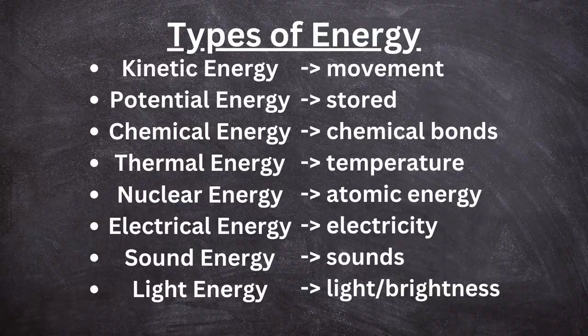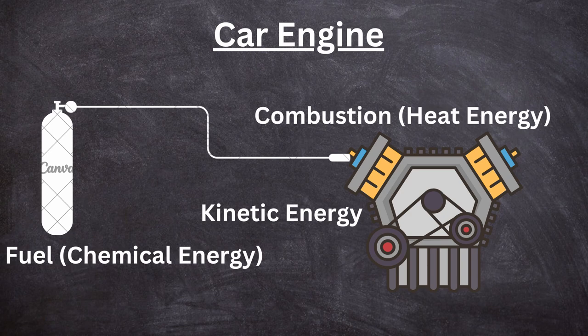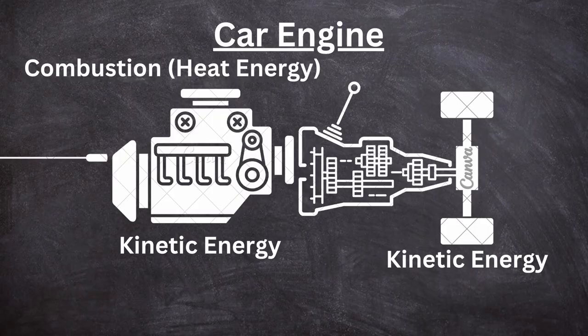Now let's use these two concepts to understand our question about the car. The car uses fuel and ignites it with oxygen in the air via a spark, triggering a transition from chemical energy through combustion to thermal energy. That thermal energy is converted into mechanical or kinetic energy as the air-fuel mixture pushes a piston, which rotates a crankshaft, which drives a transmission, transferring kinetic energy through the axle to rotate the wheels — ultimately doing work.